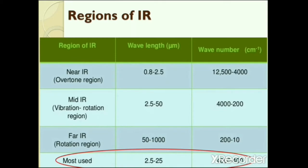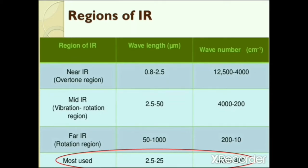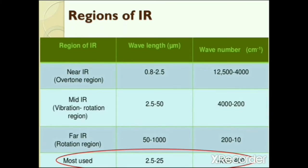Next is the regions of infrared. There are three regions: first, near infrared or overtone region; second, mid infrared or vibration-rotation region; and third, far infrared or rotation region. The wavelength of near infrared is 0.8 to 2.5 micrometers, or 12,500 to 4,000 cm⁻¹. Mid infrared is 2.5 to 50 micrometers, or 4,000 to 200 cm⁻¹.